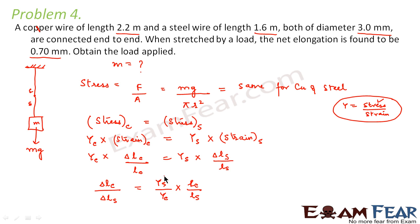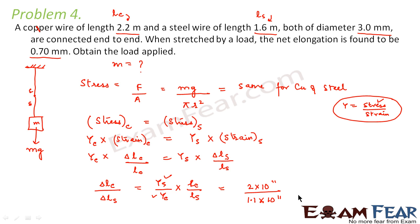We know the values of Young's modulus for steel and copper, and we know the initial lengths: the copper wire is 2.2 meters and the steel wire is 1.6 meters. Substituting these values — Young's modulus for steel is 2×10¹¹ — we calculate that δLC / δLS comes out to be 2.5. This is our first relation.